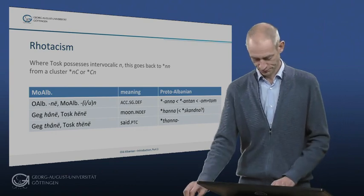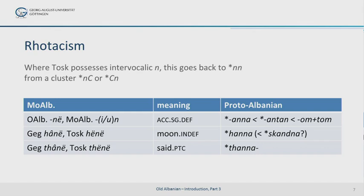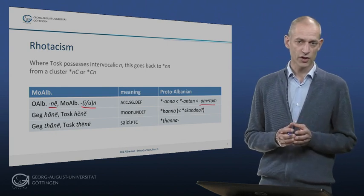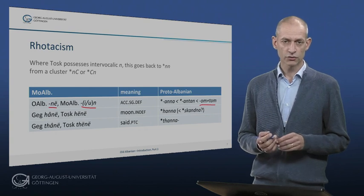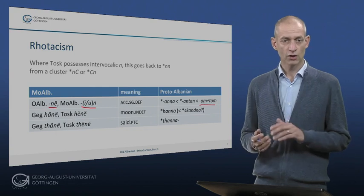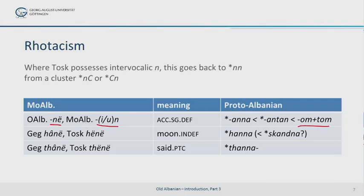Here are a few examples. The ending of the definite accusative singular in nouns never shows rhoticism. We can explain it on the basis of an earlier group NT, which came out of MT. Ultimately, this had the final M of the accusative of the noun plus the T of the demonstrative word TOM, 'that.' We know from various clues that this construction — with the modifier glued onto the back of the noun — was regular in Proto-Albanian times. The slide also shows two other examples of words with intervocalic N in both GEG and TOSC, going back to an earlier consonant cluster involving N: the word for 'moon,' Proto-Albanian HANNA, and the participle 'said,' Proto-Albanian THANNA, which have intervocalic N in both GEG and TOSC.